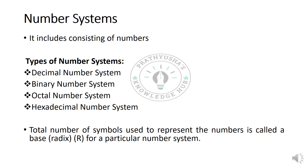Coming to number systems — we can have different types of numbers. As you can see, we can have the decimal number system, binary number system, octal number system, and hexadecimal number system. Decimal is represented with base 10, binary is base 2 (using only 0 and 1), octal is base 8, and hexadecimal is base 16. For every number system we represent with some symbols, and these numbers are called the radix or base.